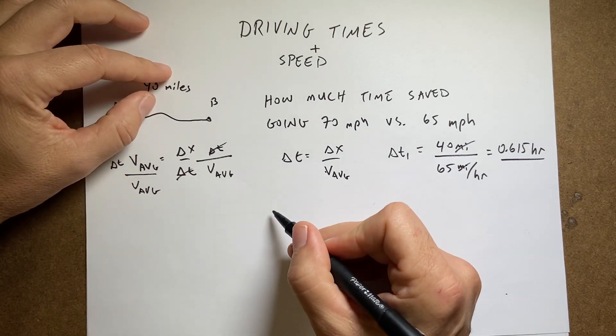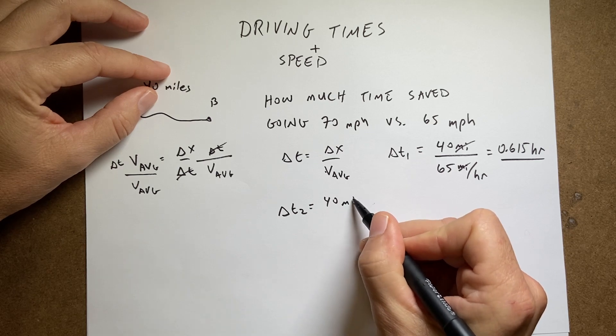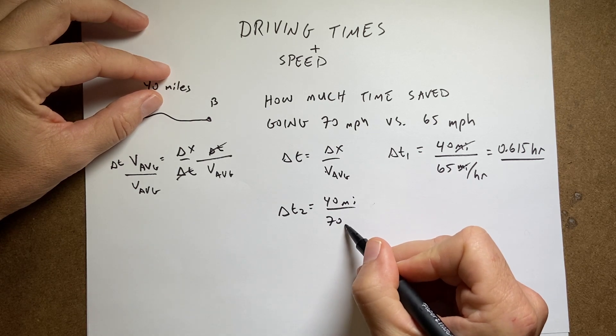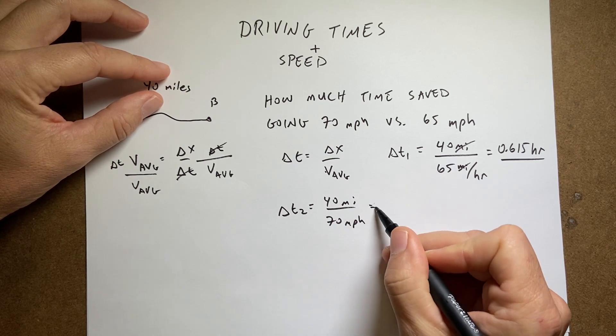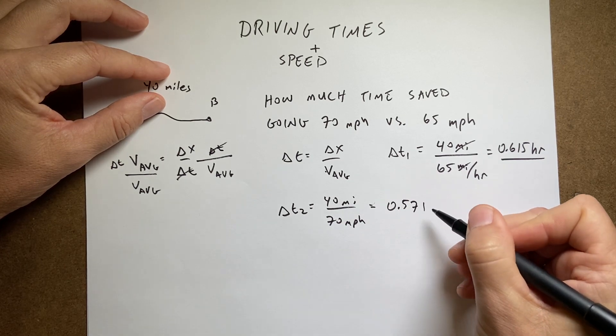Now let's do the same thing for 70 miles per hour. Delta t2 is going to be 40 miles divided by 70 miles per hour, and that's going to be equal to 0.571 hours.